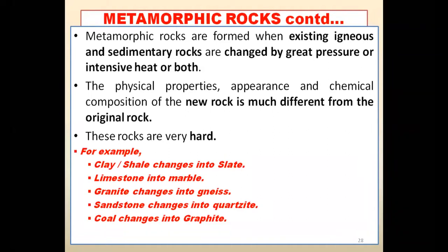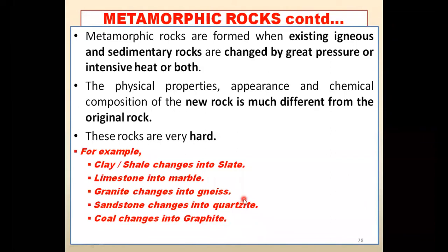My dear students, these rocks are very, very hard also. For example, clay or shale changes into slate — a different type of rock. Limestone changes into marble. Granite can change into gneiss. Sandstone changes into quartzite. These are different examples. Coal changes into graphite, and that graphite you are using in your pencil for writing work. So coal changes into graphite, sand changes into quartzite, granite changes into gneiss. These are the examples of metamorphic rocks.